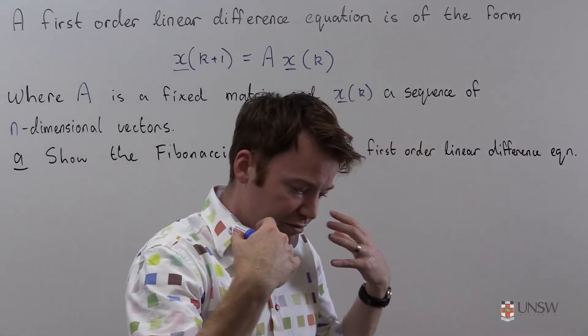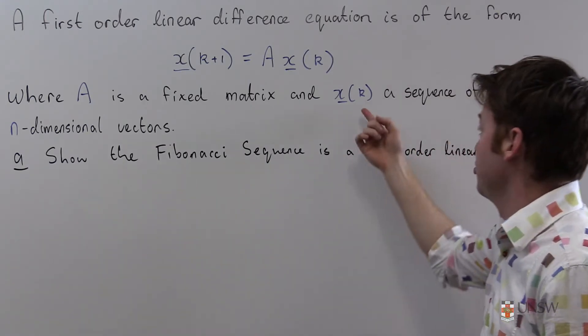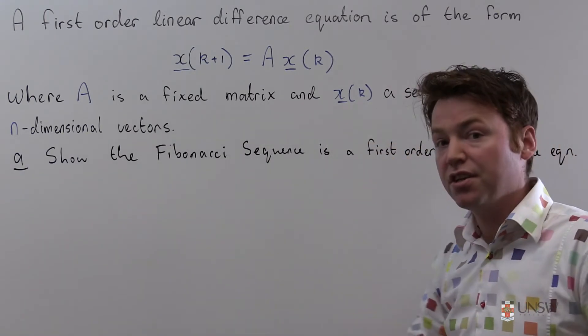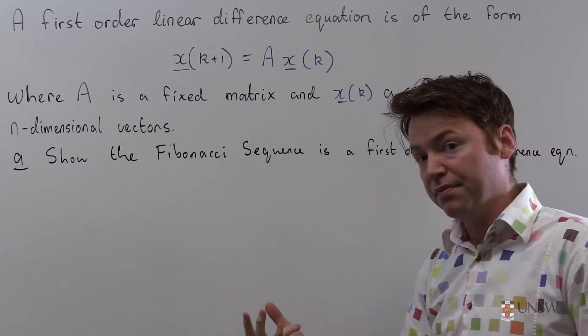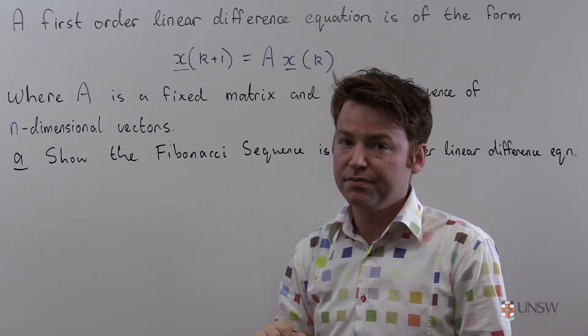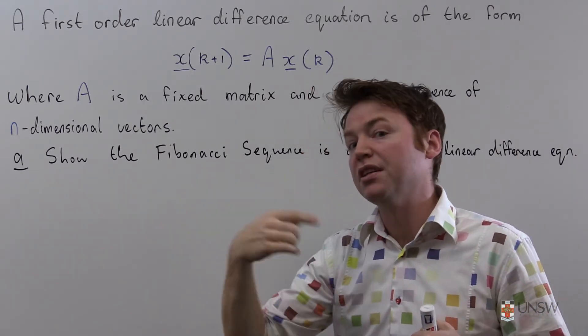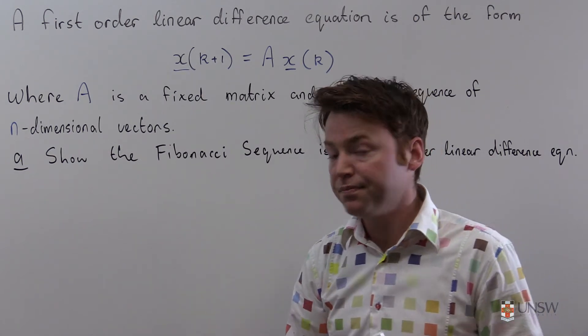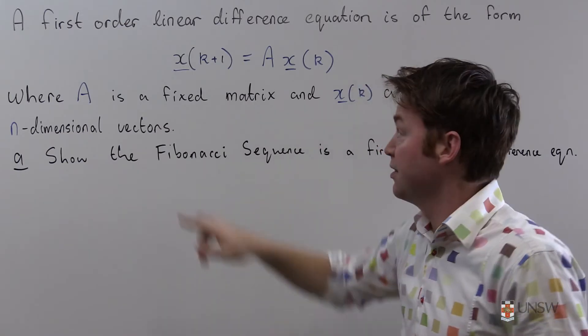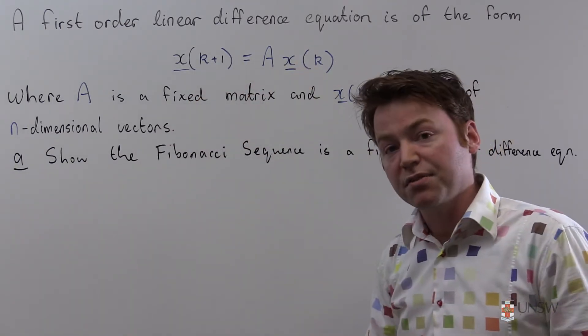Recall a regular one-dimensional sequence is some sequence of numbers indexed by an integer k. In this case we're going to have a sequence of vectors indexed by some integer k, and these vectors will be n-dimensional vectors. n represents the amount of the sequence you need to know in order to compute the next element of that sequence. And we encode this as the statement that the next element of the sequence is some matrix times the previous element of that sequence.